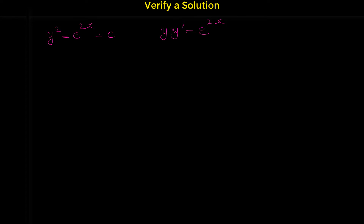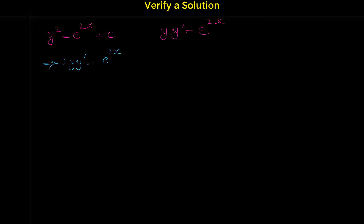For finding y prime, we have to do implicit differentiation. The derivative of y squared is 2y times y prime, based on the chain rule — the derivative of y squared is 2y, multiplied by the derivative of the inside function y, which is y prime. On the right side, the derivative of e to the 2x is e to the 2x times 2, and the derivative of constant c is 0.